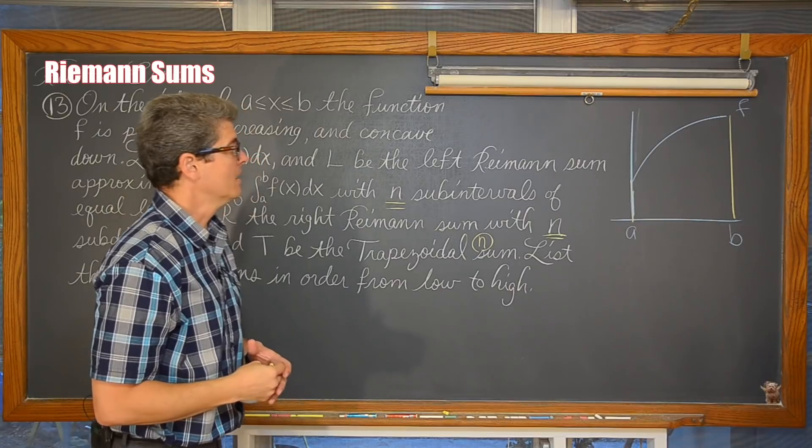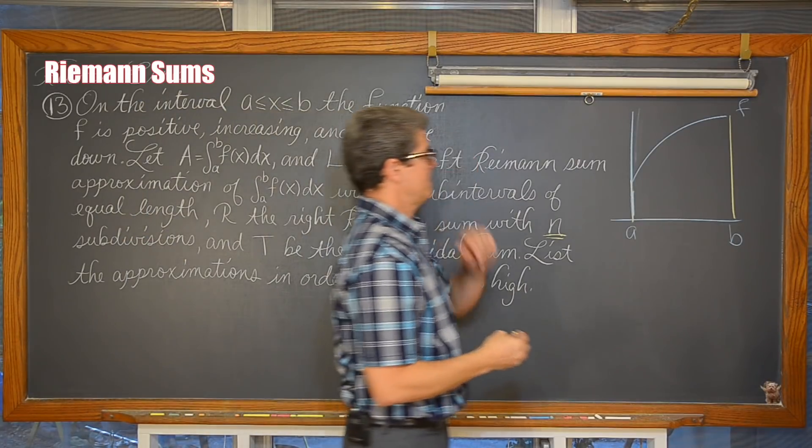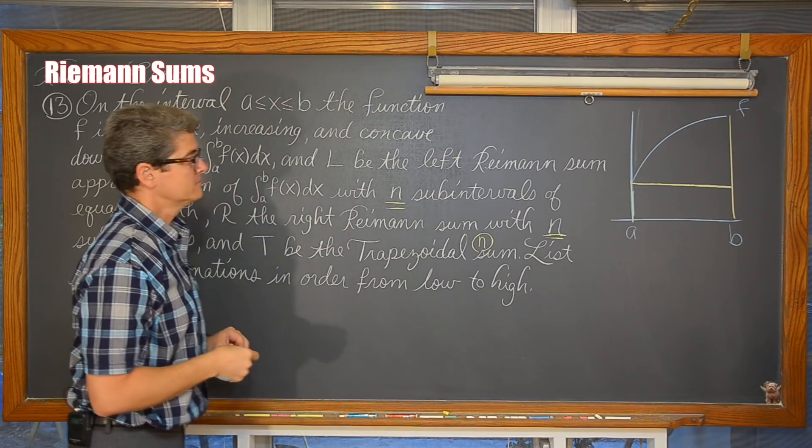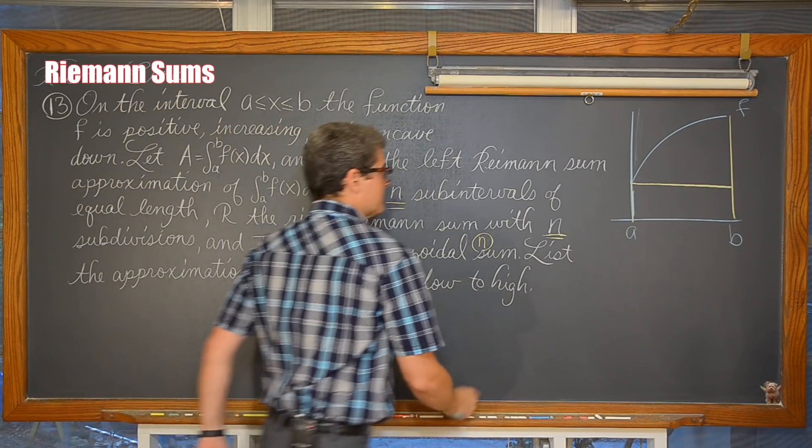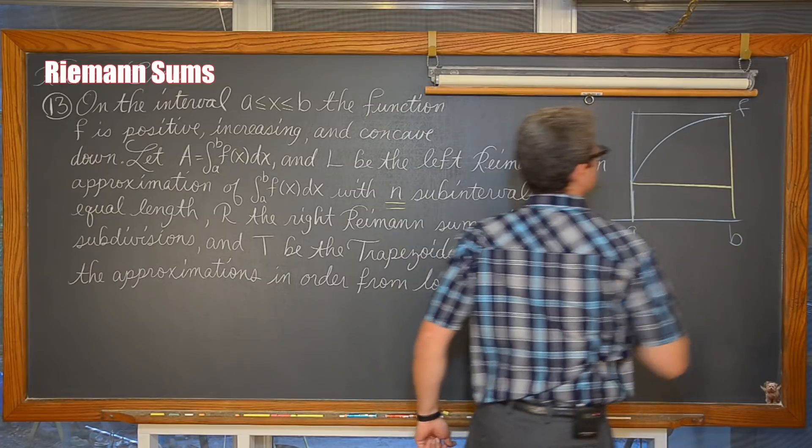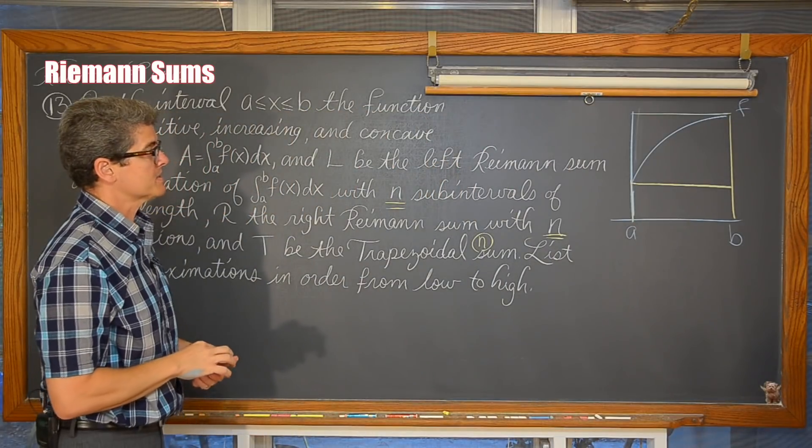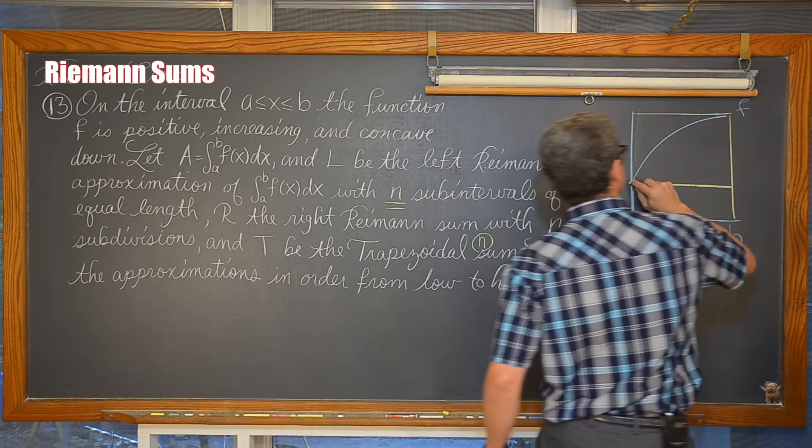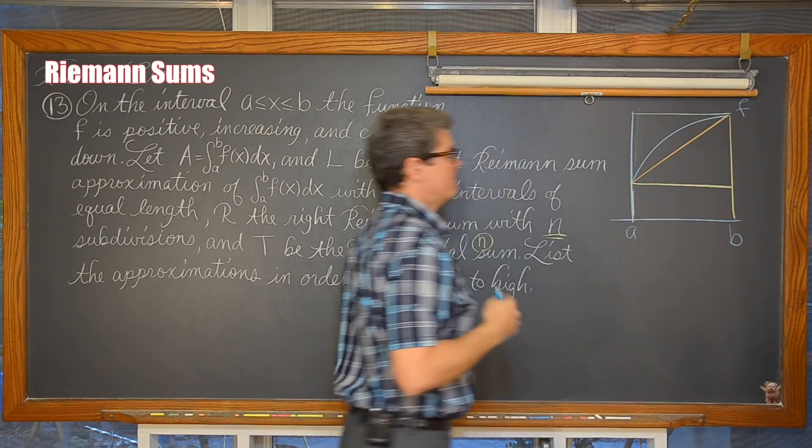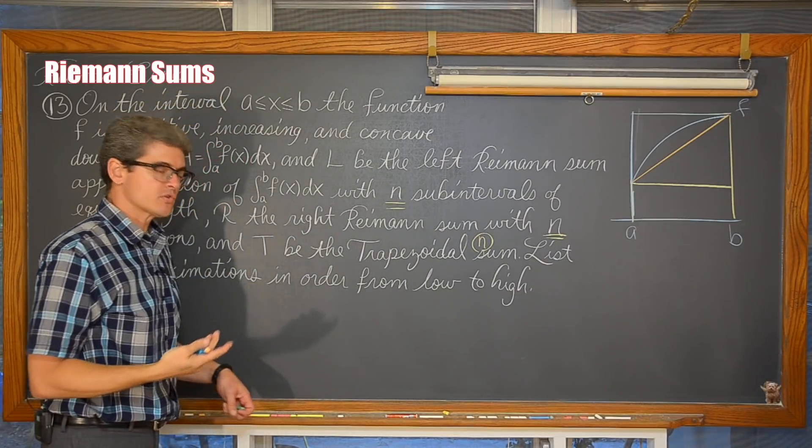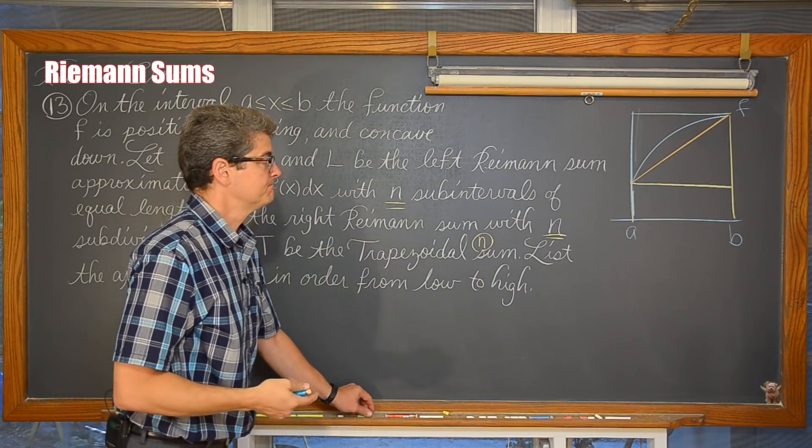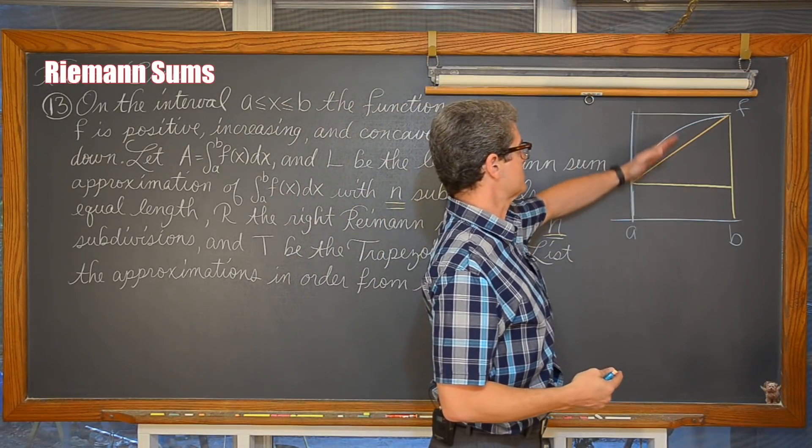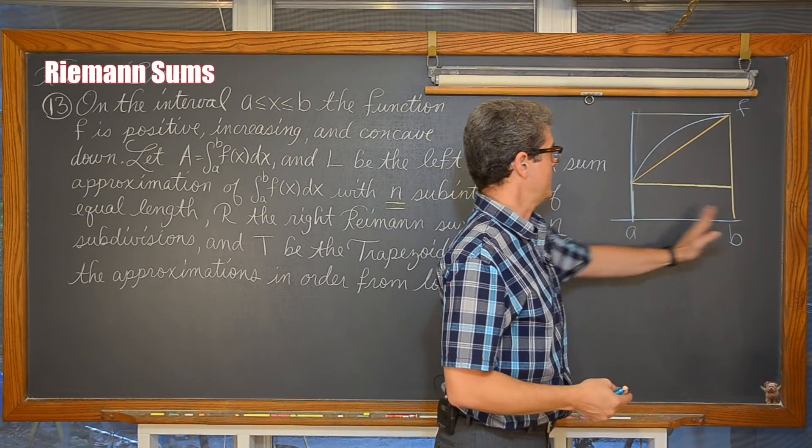Now, we have that actual value. We can estimate that area with a left end point. We can estimate that area with a right end point. We can estimate that area with a trapezoidal sum. Voila! Then, of course, we have the actual value of the definite integral. In this case, we could just say it is the area between the function f and the x-axis between a and b.